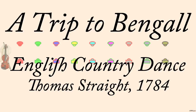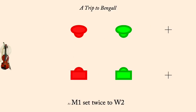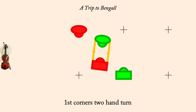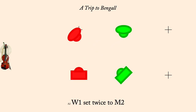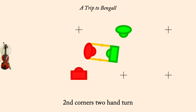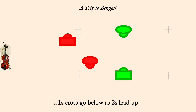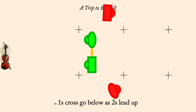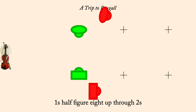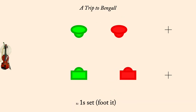A Trip to Bengal, Thomas, 1784. Man one set twice to woman two. First corners two-hand turn. Woman one set twice to man two. Second corners two-hand turn. One's cross, go below as twos lead up. One's half figure eight up through twos. One's set, face partner, four changes of rights and lefts.